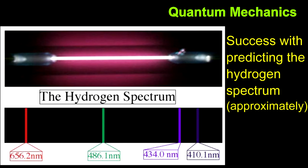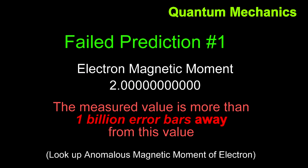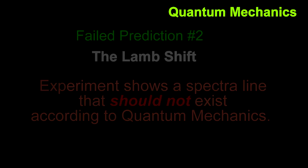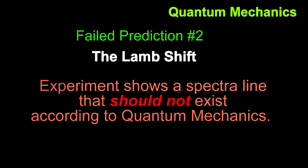It had early success with predicting the spectral lines of hydrogen and the magnetic moment of the electron. Later, better measurements showed that these predictions were wrong, so you could say that the theory was discredited by experiment. But in reality, quantum mechanics is still quite useful. It's an approximation, just like Newton's mechanics is an approximation.